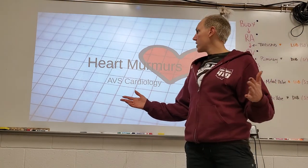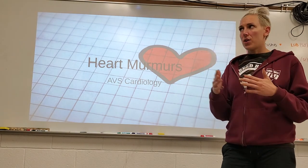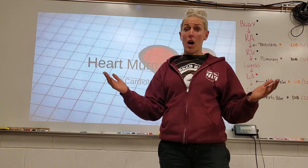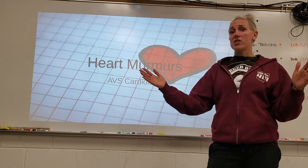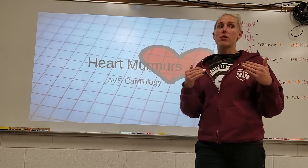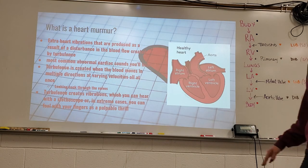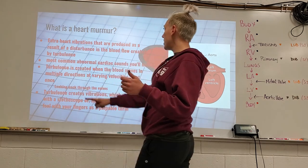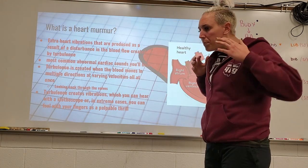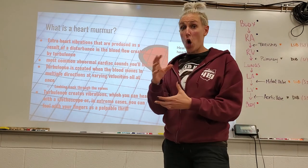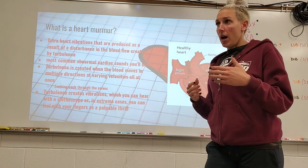Where does a heart murmur come from? The heart sounds — the lub and the dub — come from the valves snapping shut. Sometimes when those valves don't snap shut correctly or together, that's where we get a heart murmur sound. A heart murmur is any extra heart vibration produced as a result of disturbance in blood flow created by turbulence.